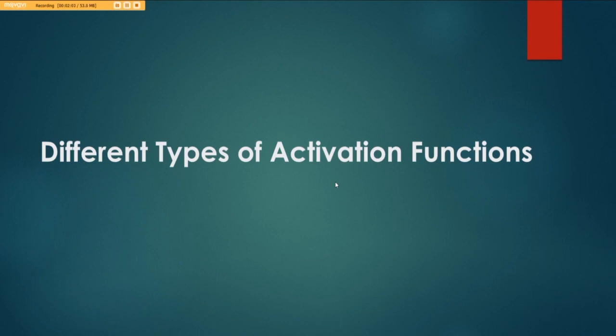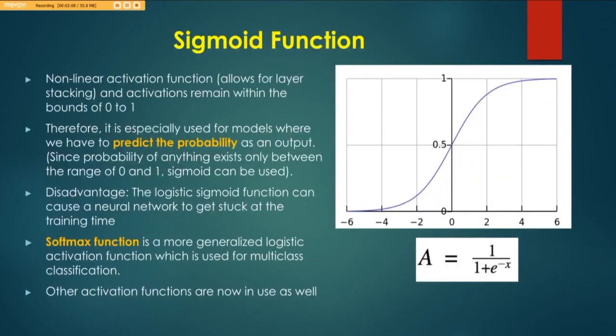Now I am going to introduce you to the different types of activation functions which are most commonly used. One of the most commonly used activation functions is a sigmoid activation function. It's a non-linear activation function and, because the problems that we typically use with artificial neural networks and deep learning have a non-linear nature, mostly the activation functions are non-linear and this allows for layer stacking. The activation remains within the bounds of 0 to 1, so basically very large or unnatural values won't result in that neuron being fired.